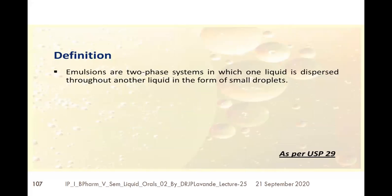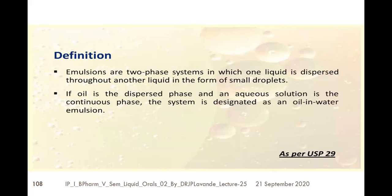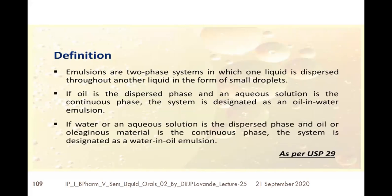According to USP 29, emulsions are two-phase systems in which one liquid is dispersed throughout another liquid in the form of small droplets. If oil is the dispersed phase and an aqueous solution is the continuous phase, the system is designated as an oil-in-water (O/W) emulsion. Conversely, if water or an aqueous solution is the dispersed phase and oil or an oleaginous substance is the continuous phase, it is designated as a water-in-oil (W/O) emulsion.